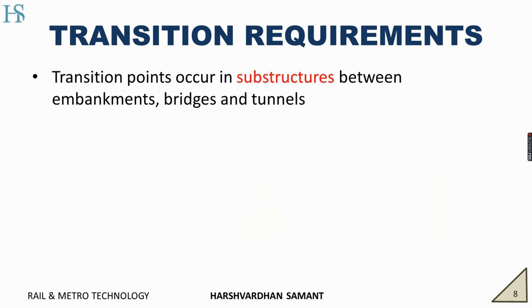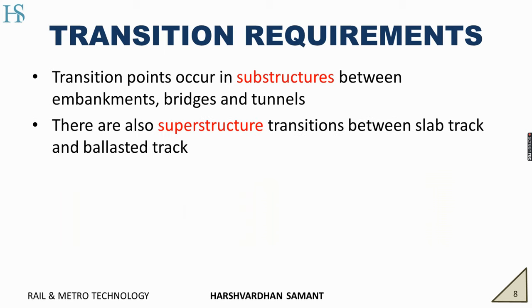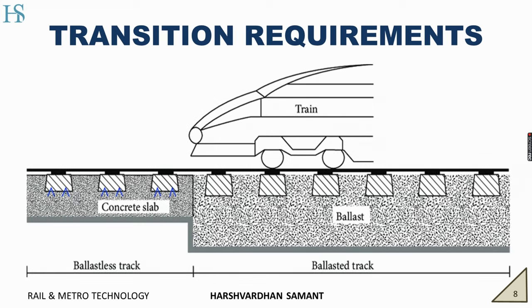Transition requirements. Transition points occur in a substructure between embankment, bridges and tunnels. There are also superstructure transitions between slab tracks and ballasted tracks. In the figure in front of you, to your left is a ballastless track and to your right is a ballasted track. When a train moves from ballasted track to ballastless track, it moves from ballast to concrete slab. Each material will have different stiffness and different properties, so this zone in between the two is called a transition zone.